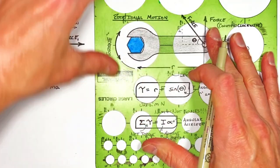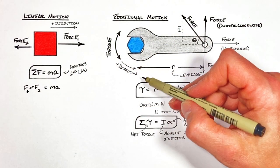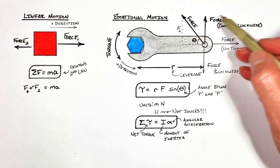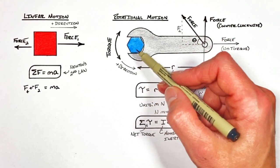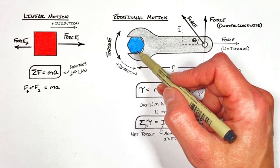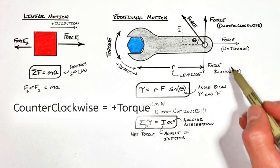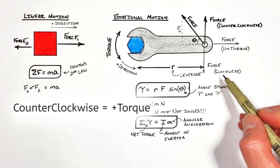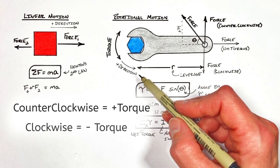So instead we say the positive direction is counterclockwise. So any force or torque which is causing some object to rotate counterclockwise we say is positive. And any force which is trying to make something rotate clockwise we say is acting in the negative direction.